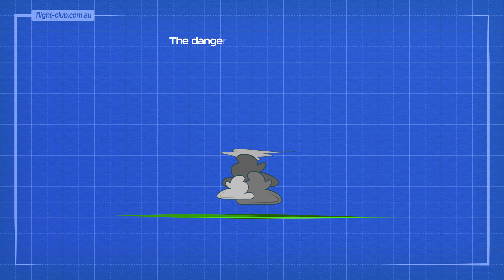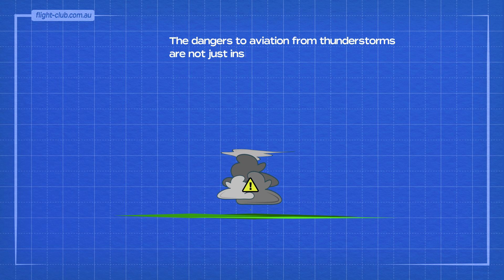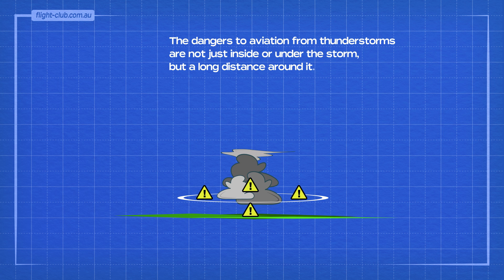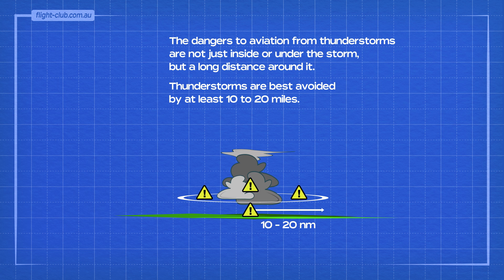The dangers to aviation from thunderstorms are not just inside or under the storm but a long distance around it. Thunderstorms are best avoided by at least 10 to 20 miles.